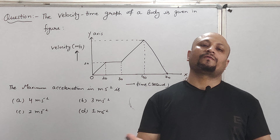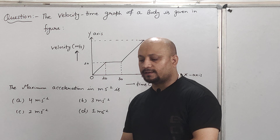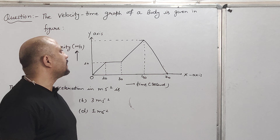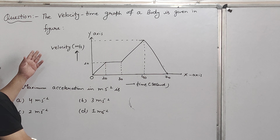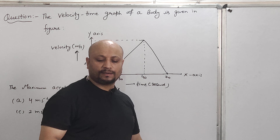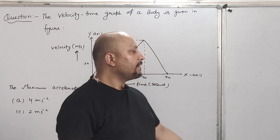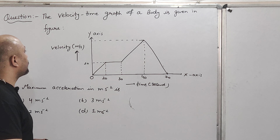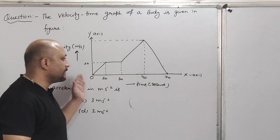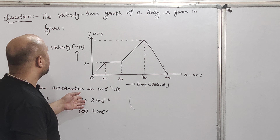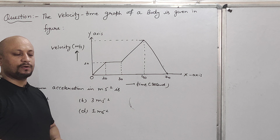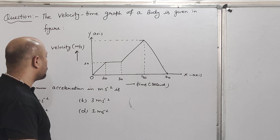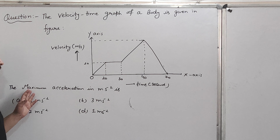Let's start today's graphical based question. The question is: the velocity-time graph of a body is given in the figure. The vertical y-axis represents velocity and the horizontal x-axis represents time in seconds. We have to find the maximum acceleration in meters per second square.